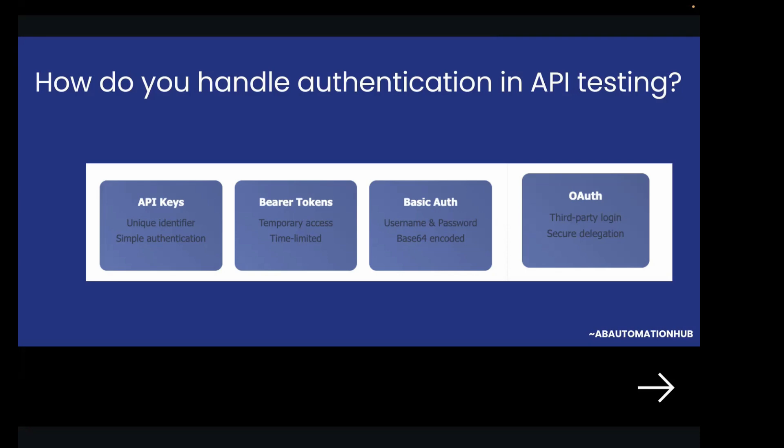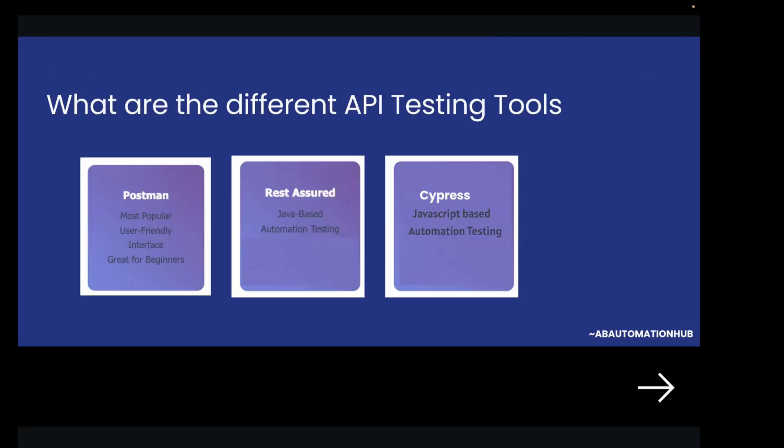What are the different API tools in the market? For manual testing, I primarily use Postman — it is super user-friendly and very easy to learn, with a great UI where I can see my request and response. Next is REST Assured, which is great if you know Java and want to automate your API testing. Another tool is Cypress, which is JavaScript-based and can also be used to automate API testing.